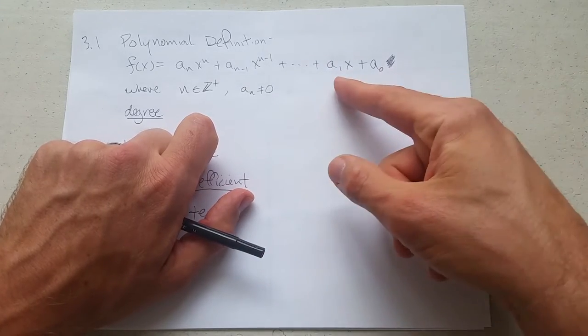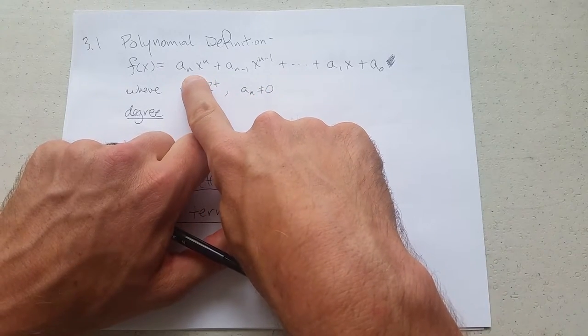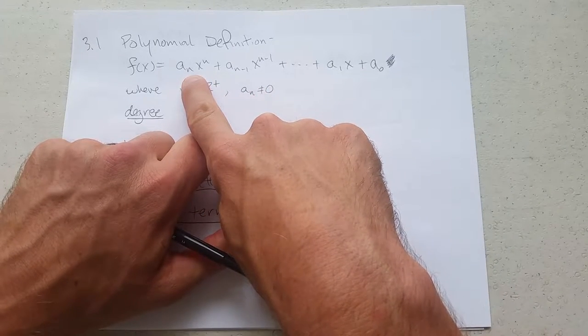Maybe it's easier to go the other way: zero, one, two, three, four, five, all the way up to whatever n is. We're not really going to go past n equals five.